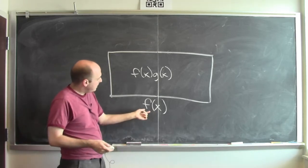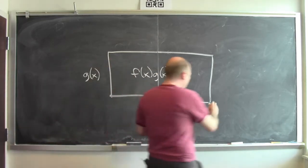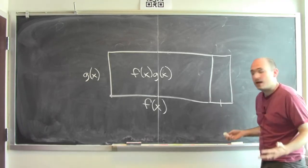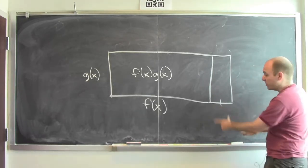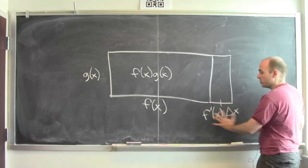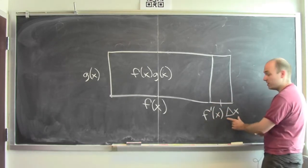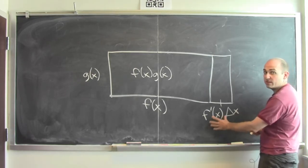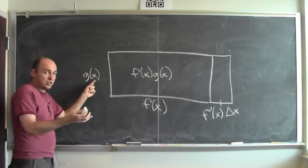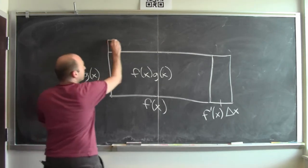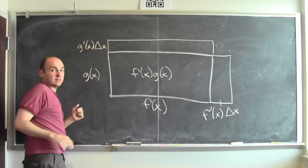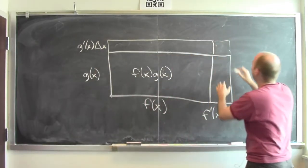When I wiggle x by some small amount delta x, f of x changes by some amount. The amount that f of x changes is the derivative of f at x times how much the input changed — delta x. This is a measure of how much the output changes; the derivative is the factor that relates input change to output change. Similarly, g will also change, by the derivative of g at x times delta x.